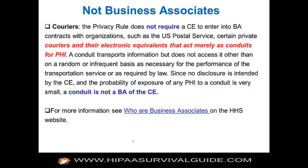Couriers: the privacy rule does not require a covered entity to enter into a business associate contract with organizations such as the U.S. Postal Service, UPS, FedEx, certain private couriers, and their electronic equivalents that act merely as a conduit. Conduits for electronic ePHI include your ISP and wireless provider; you can also have conduits for paper PHI. In either case, these couriers and pipelines are not considered business associates of the covered entity.